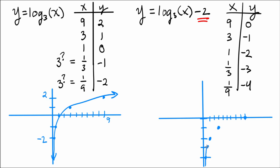It still has the Y-axis as a vertical asymptote, and it has the same shape as the previous, but just shifted down by 2.